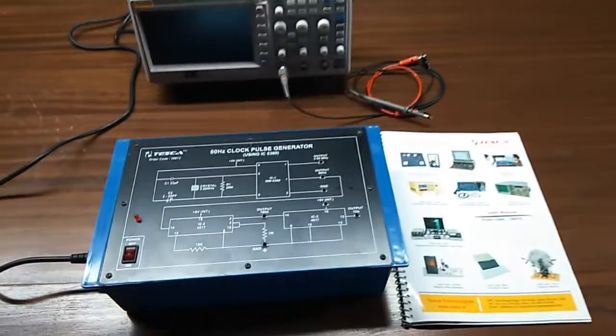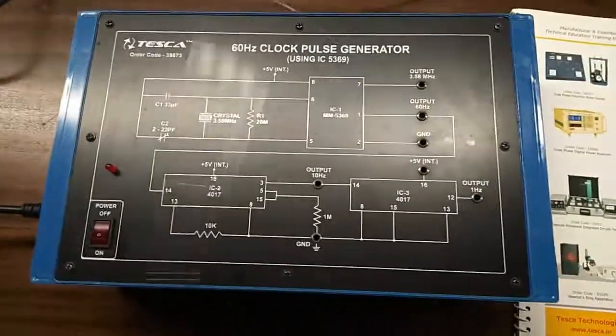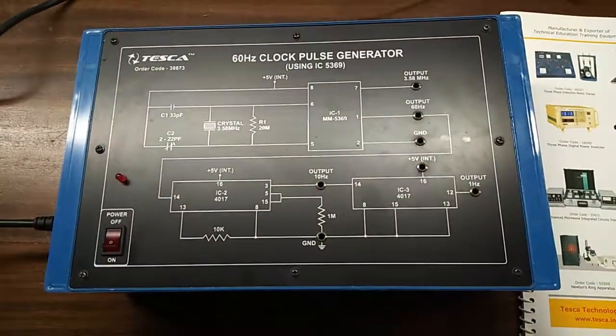Today, we are going to show you our 60 hertz clock pulse generator using IC 5369. The order code is 38673.